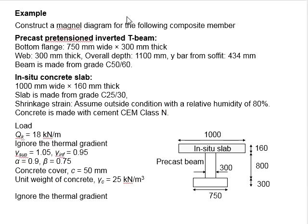The member is subjected to a Qk of 18 kN/m. Ignore the thermal gradient. The γ_sup and γ_inf are given as 1.05 and 0.95. α and β are given as 0.9 and 0.75. The concrete cover is 50 mm and the unit weight of concrete is 25 kN/m³.